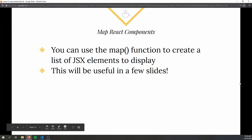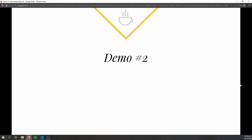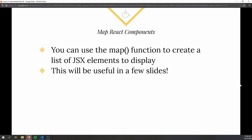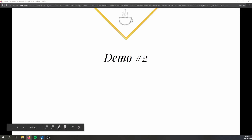A key side note: you can use the map function to create a list of JSX elements to display on screen. Instead of your function transforming a value, it returns a JSX element. This will become much more relevant in the next few slides. Demo 2 is all about this concept.